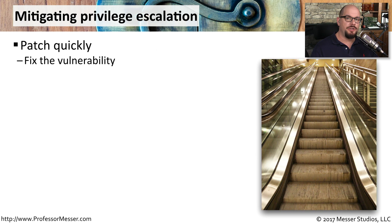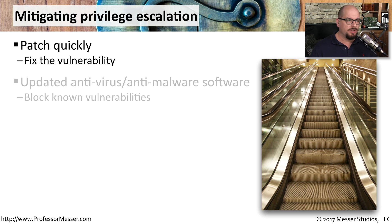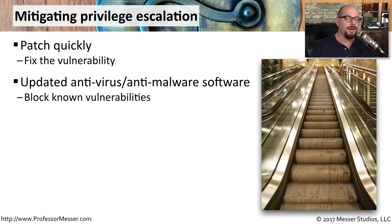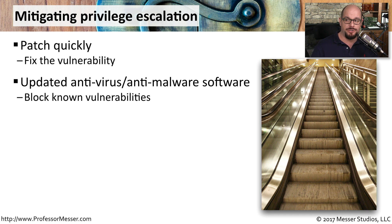A privilege escalation is generally something you can find and patch very quickly. It's related to a bug or a vulnerability, and it's something that you can resolve by updating some software. You might also want to update your antivirus and your anti-malware software. There are known vulnerabilities that those applications are able to stop, even if you haven't patched your system.